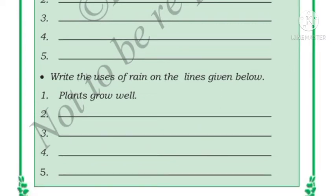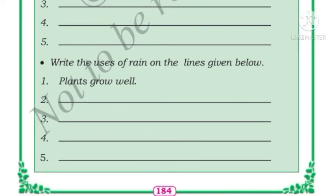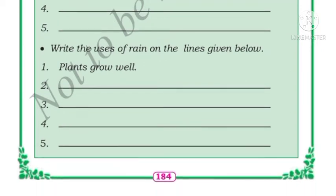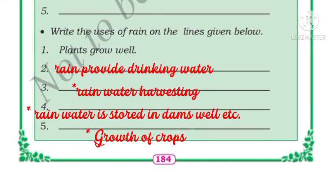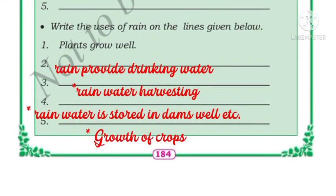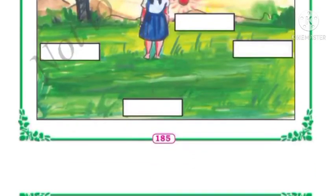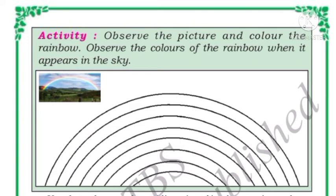Now write the uses of rain in the lines given below. First, rain helps in the growth of plants. Second, rain provides drinking water. Third, rain is used for rainwater harvesting — rainwater is stored in dams, wells, etc.